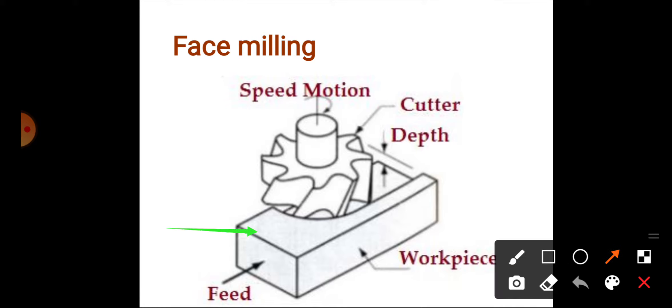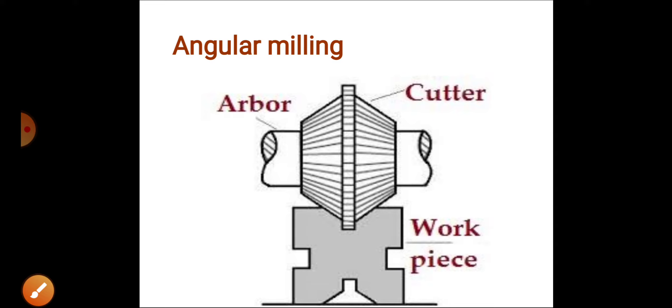Next is angular milling. The angular milling operation is performed to produce an angular surface on the top surface of the work piece using an angular milling cutter. It may be of single conical side or double conical side. The angles of these angular milling cutters vary from 45 to 60 degrees.